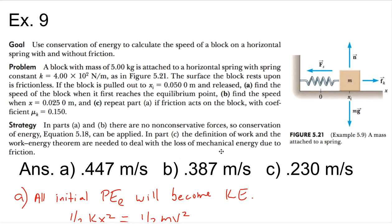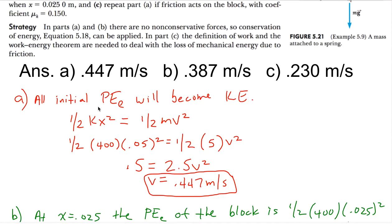This is a conversion of energy from potential energy of elasticity becoming kinetic energy. Filling in the numbers: one-half kx squared tells us how much potential energy the spring has to begin with, and all of that gets converted into kinetic energy, one-half mv squared. We're solving for the velocity of the block at that point in time, so we solve through for v.